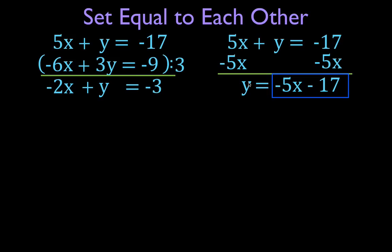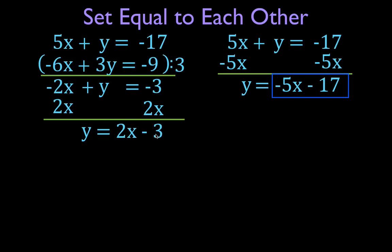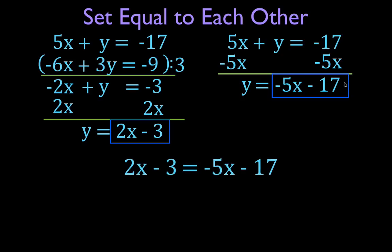Now I have y isolated. I just solve this one for y by adding 2x to both sides — I want to move the 2x to the other side of the equal sign. Minus 2 plus 2 goes to 0, and I'm left with y equals 2x minus 3. Now I have both equations solved for y. That means if 2x minus 3 equals y and minus 5x minus 17 equals y, then 2x minus 3 equals minus 5x minus 17. This is the setting them equal to each other — the Gleichsetzungs portion of this Verfahren.